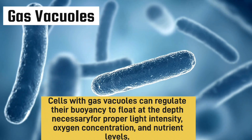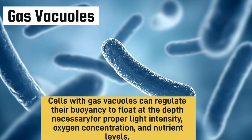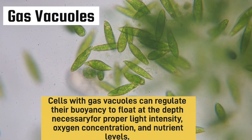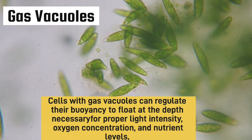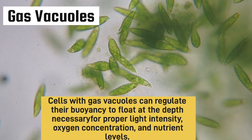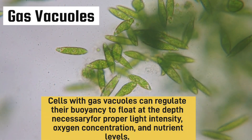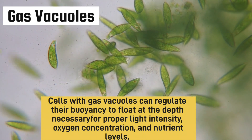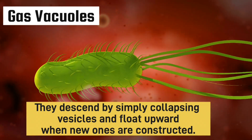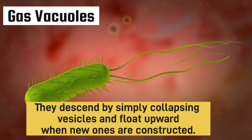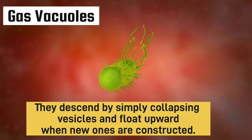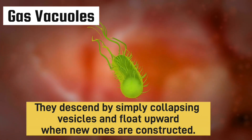Cells with gas vacuoles can regulate their buoyancy to float at the depth necessary for proper light intensity, oxygen concentration, and nutrient levels. Organisms that need more light will rise to the surface of the water, while those needing lower light will regulate their buoyancy to deeper levels. This is how these organisms regulate the concentration and number of gas vesicles to control their sinking capabilities and survive in nature.